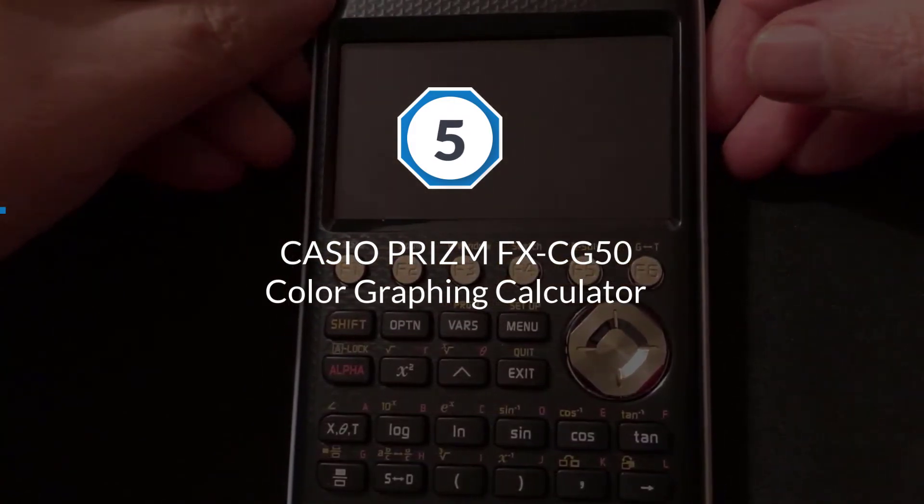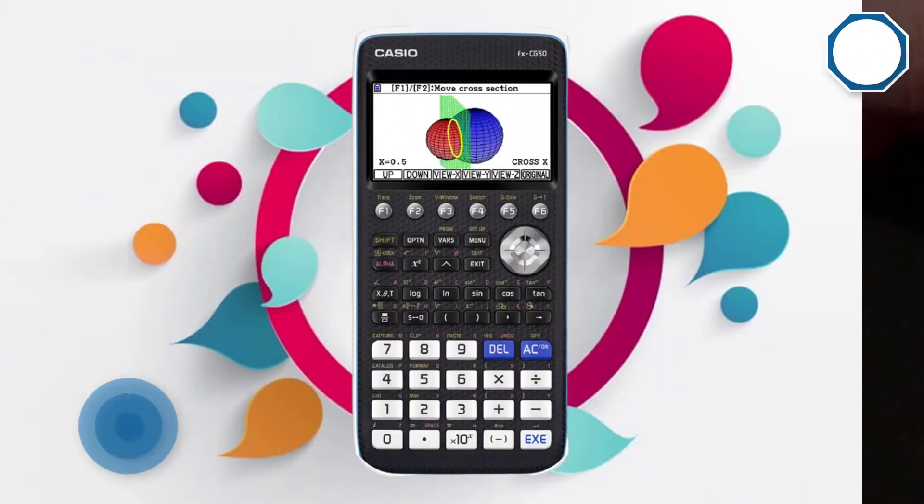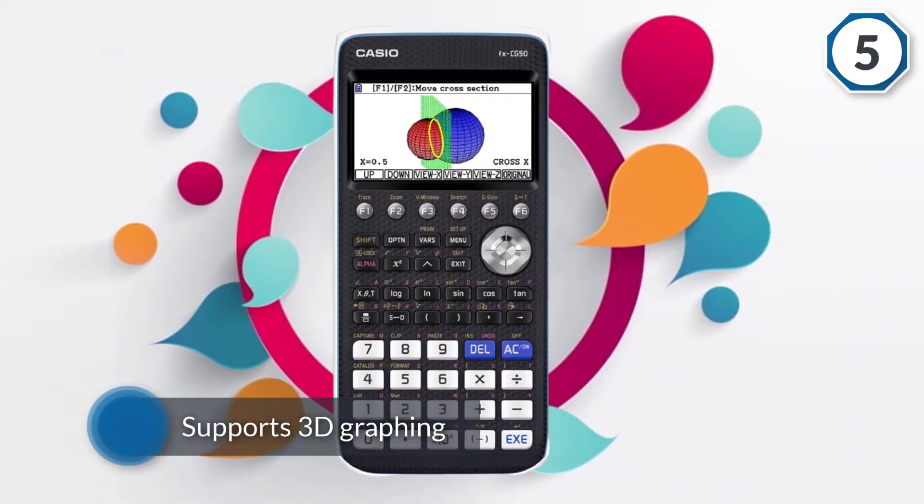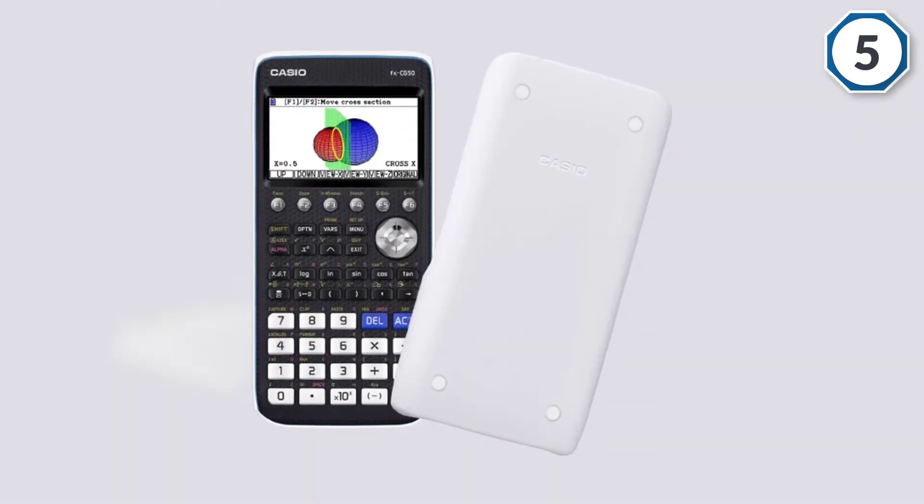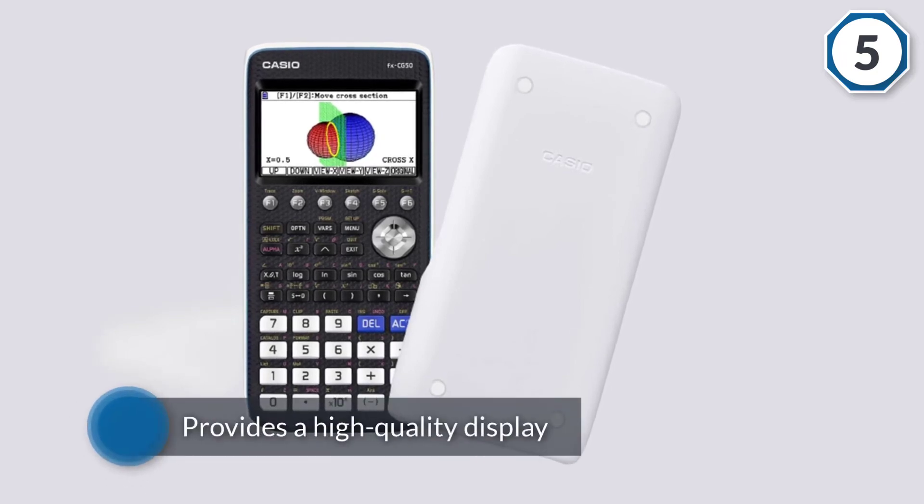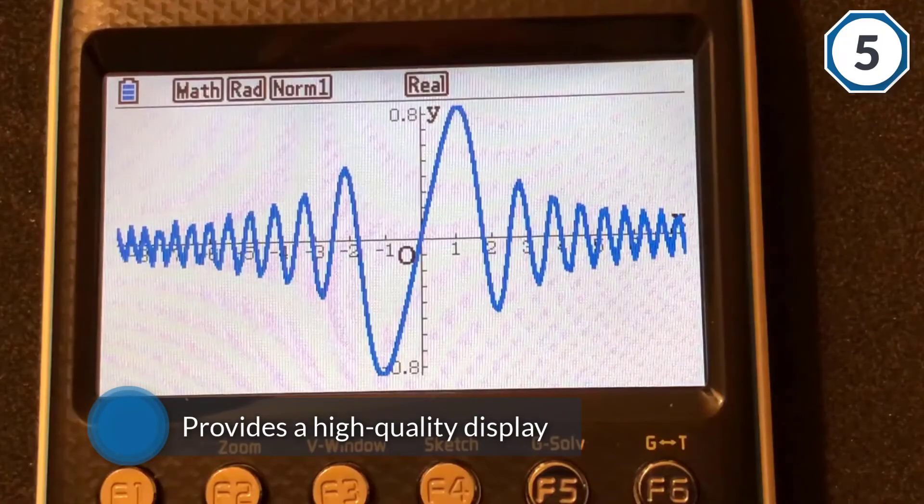If the colored screen is your primary search criterion, the FX-CG 50 will most likely fit your needs. Casio has ensured that it delivers quality at a reasonable price. This graphing calculator supports 3D graphing and provides a high-quality display.